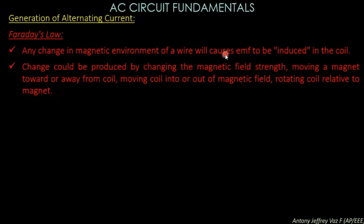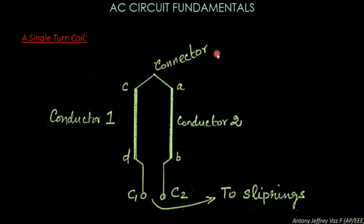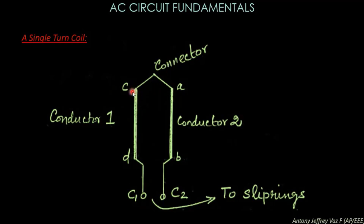So the change in magnetic field across a coil or wire will cause an induced EMF. Today we will see how an alternating current is going to be produced using the principle of Faraday's law. This is the coil — a single turn coil because we have only one turn. Here you see the sides of the coil: coil side AB is conductor 2, and coil side CD is conductor 1. The connector between C and A is known as the connector.